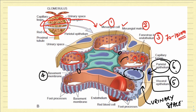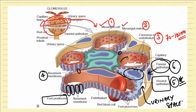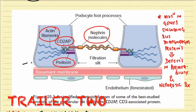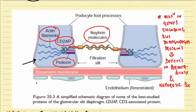One more important point regarding the visceral epithelium: it has certain processes, and these long processes of the visceral epithelium are called foot processes. The visceral epithelium is also called the podocytes. So to summarize, the first structure is the endothelium, which is fenestrated.